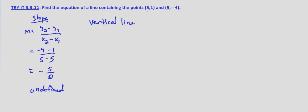So both our points have the x coordinate 5. And that means that the equation for our line containing these points is x equals 5.